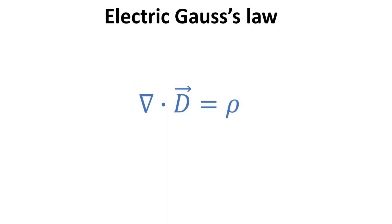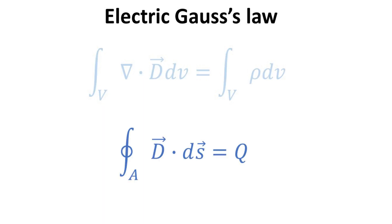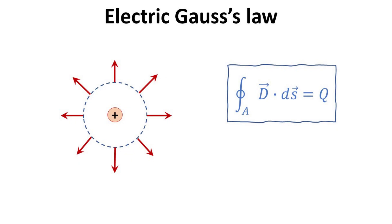First up is the electric Gauss law, which states that the local divergence of the electric flux density equals its local charge density. Taking the integral over volume on both sides of the equation, the right integral gives us the total charge q enclosed by the volume, while the left volume integral can be rewritten as an integral of D over the closed surface of the volume through the divergence theorem. Thus, the electric Gauss law simply states that the electric flux density emanating out of an enclosed volume equals the charge it encloses.